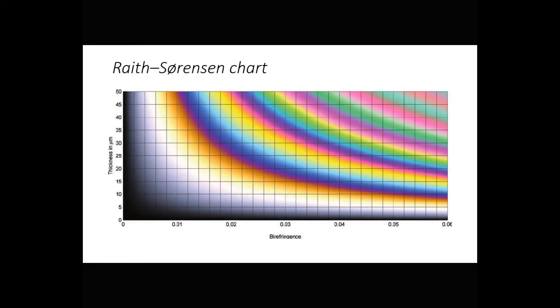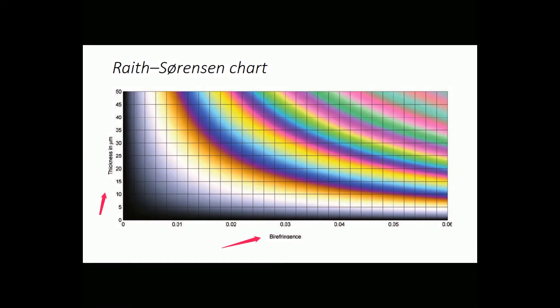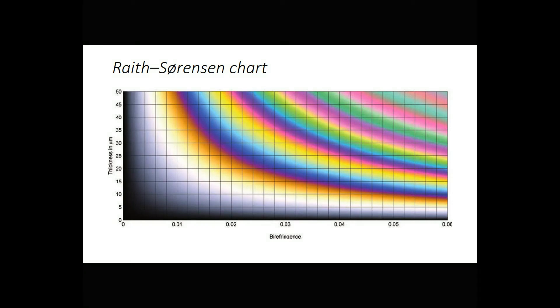Retardation depends on birefringence, which is the difference in refractive index for the slow and fast rays. And it also depends on sample thickness. So this chart shows birefringence across the bottom and thickness vertically. It's called a Wraith-Sorenson chart. Retardation increases diagonally from zero in the bottom left corner to about 3,000 nanometers in the upper right. Interference colors vary in hue and intensity with stage rotation. So we only see these colors if we rotate the stage and look for maximum interference colors. And we also need to look at multiple grains of the same mineral, because some of them could be oriented wrong, so they don't show much in the way of interference colors at all.